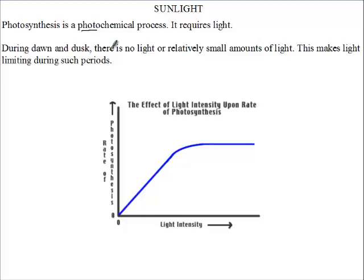Remember we said that a limiting factor is something that exists in short supply that affects a life process. So here at dawn and dusk, there is no light or relatively small amounts of light. This makes light limiting during such periods.